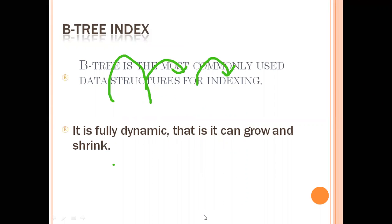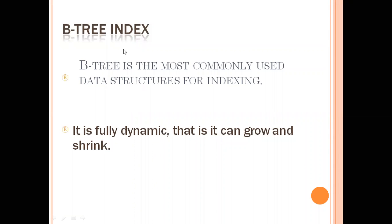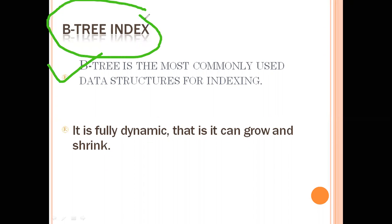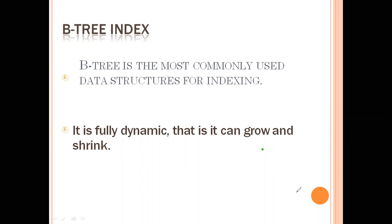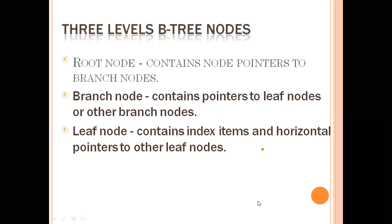If multi-level index is clear, then we have our very popular one known as the B-tree index. We use the B-tree index most of the time. The main benefit of the B-tree index is that it is dynamic — it can grow and shrink as per requirements. There are three levels of B-tree nodes: root node, branch node, and leaf node.